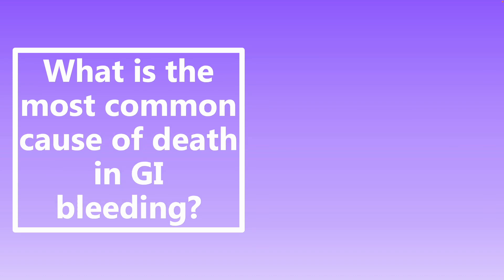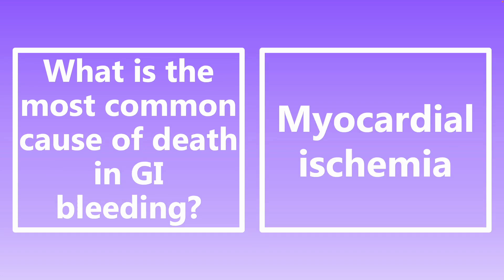What is the most common cause of death in GI bleeding? This is actually due to myocardial ischemia — a bit of a tricky question. Elderly patients may have a slow GI bleed that drops their hemoglobin over several months, so they don't bleed to death per se. The most common cause of death is myocardial ischemia, not exsanguination.